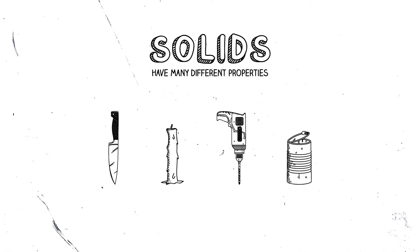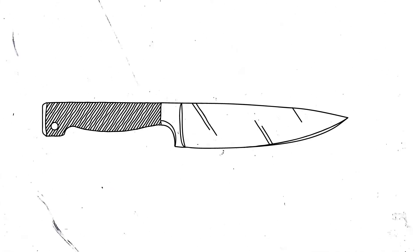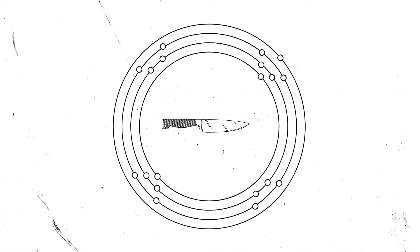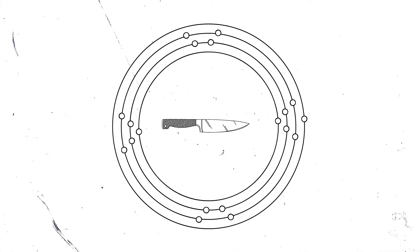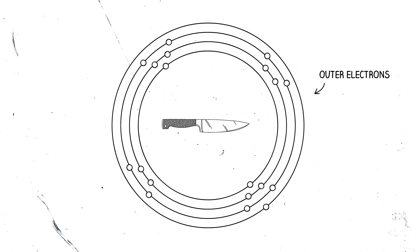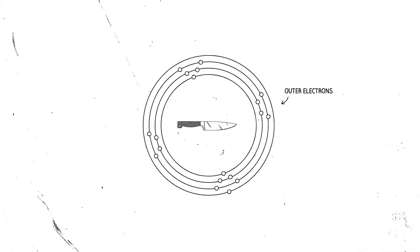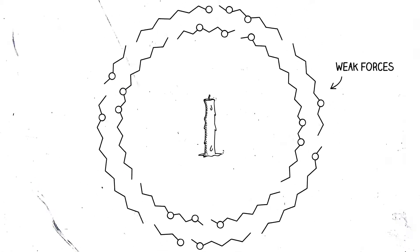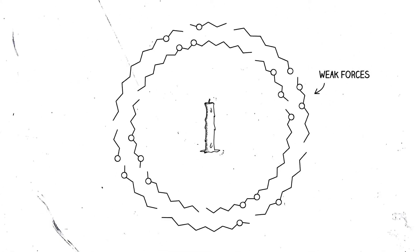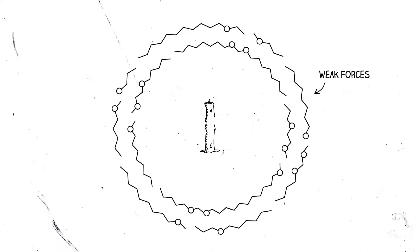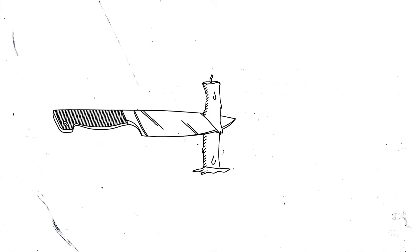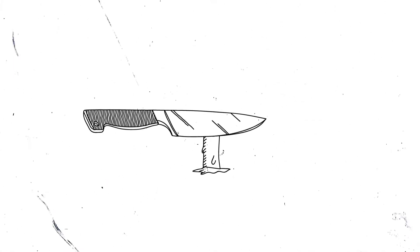Most materials are solids, and a solid can have many different properties. A solid knife is made of an array of metal atoms that are strongly held together by sharing outer electrons, which makes it a hard material. A candle is made of wax, formed from atoms joined to make molecules. The molecules are only held together by weak forces, so the wax is a soft material.